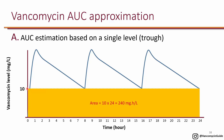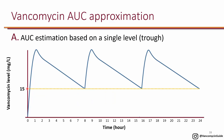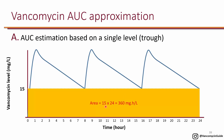That is where the recommendation of a trough of 10 to 15 comes from. For a non-serious infection, if you have a trough of 15, then 15 times 24 gives you 360. That is close to 400, and of course you also have all the area at the very top. So the old guidelines recommend a trough of 10 to 15, saying that achieving that trough probably means an AUC of at least 400.